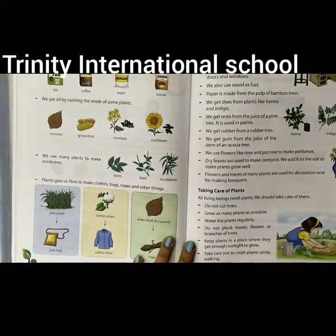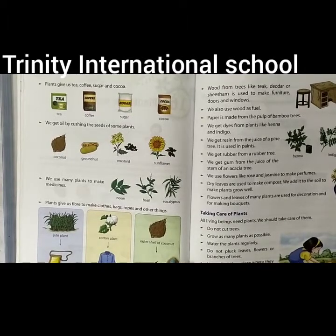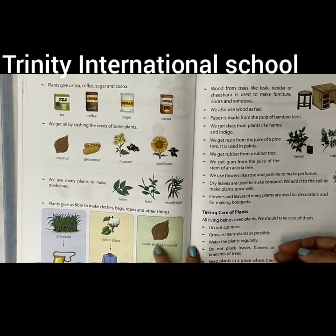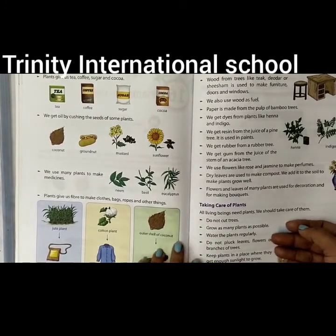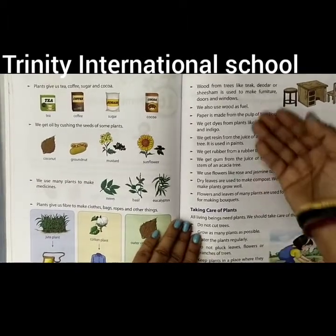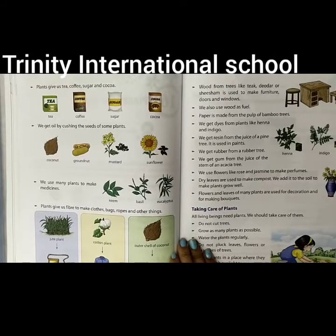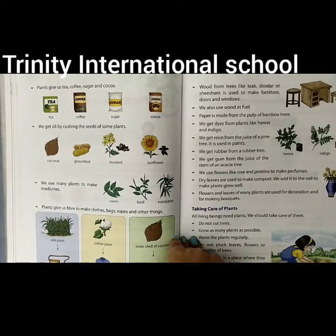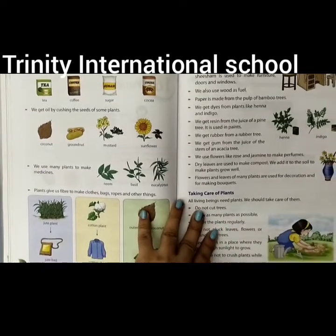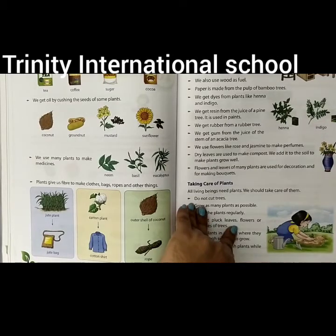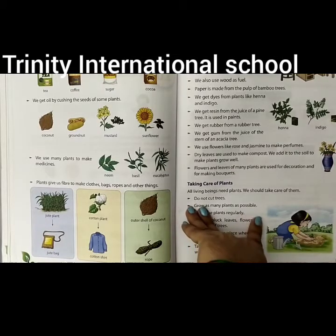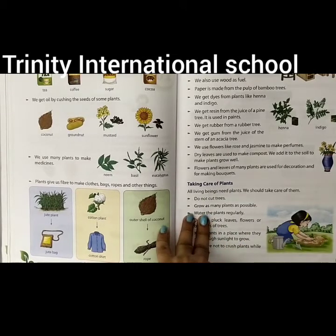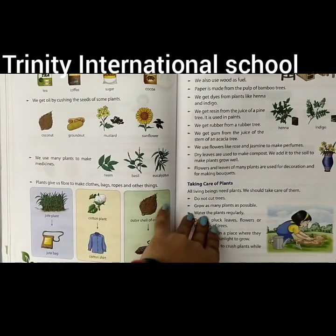So you have seen the common important uses of plants: plants give us food, oil, spices, medicinal things, and fibers. Along with that, we are getting wood for making furniture, wood to use as fuel, resins, gum, dyes, perfumes from flowers, and dry leaves which can be used as compost. So many varieties of uses we can get from our plants.